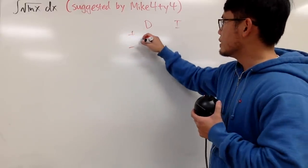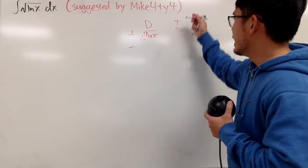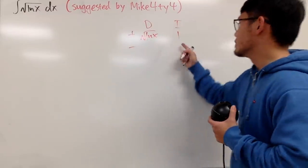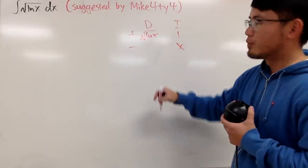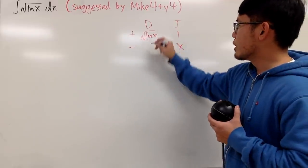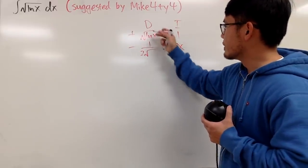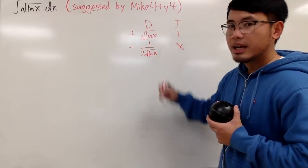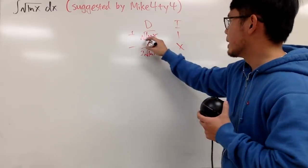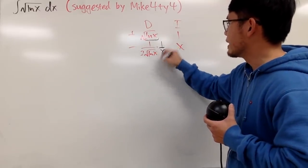I will be differentiating square root of natural log, and then right here I will just be integrating 1. And then of course, when you integrate 1 you get x, and when you differentiate this guy, the derivative of square root is 1 over 2 square root of the inside, which is natural log of x. And the chain rule says what? You have to multiply by the derivative inside, which is 1 over x.